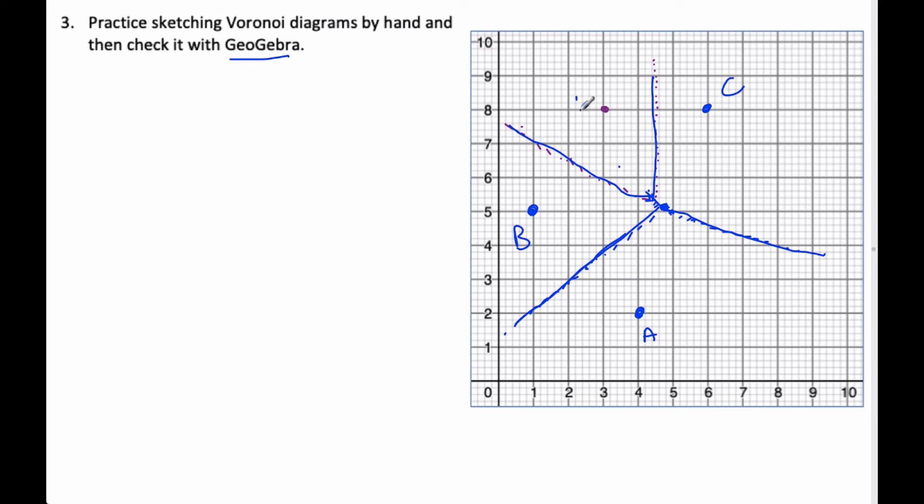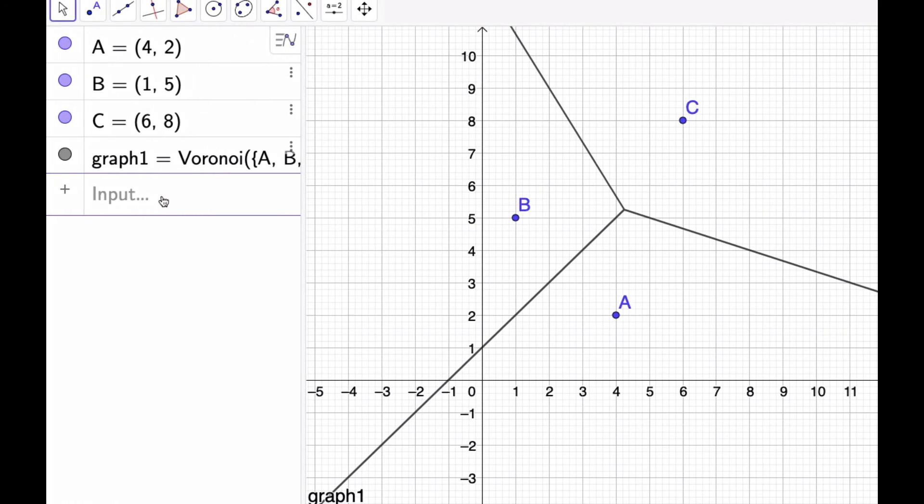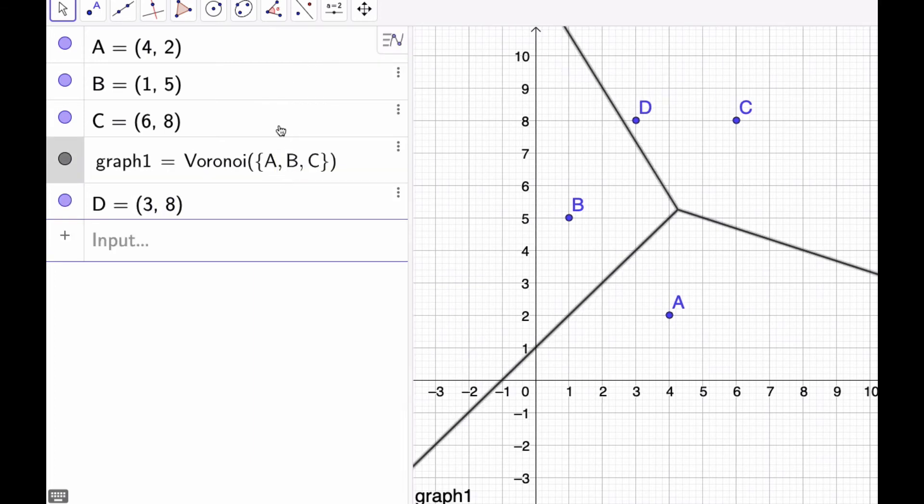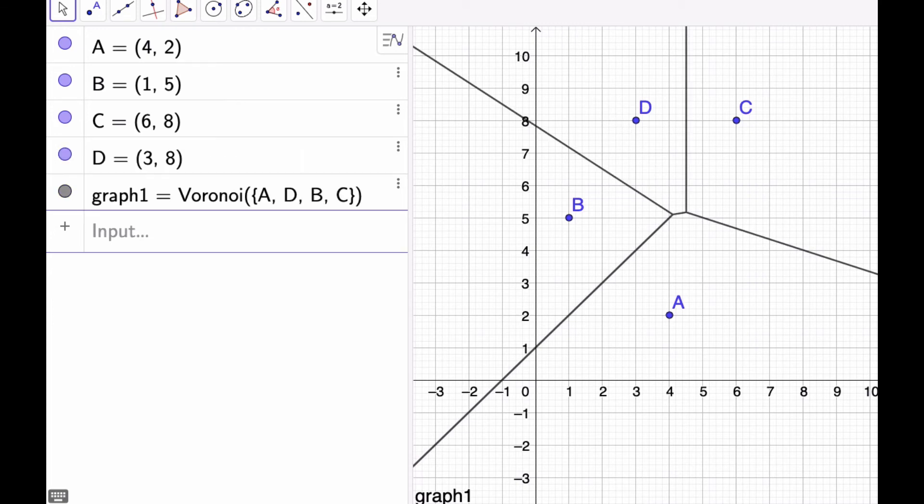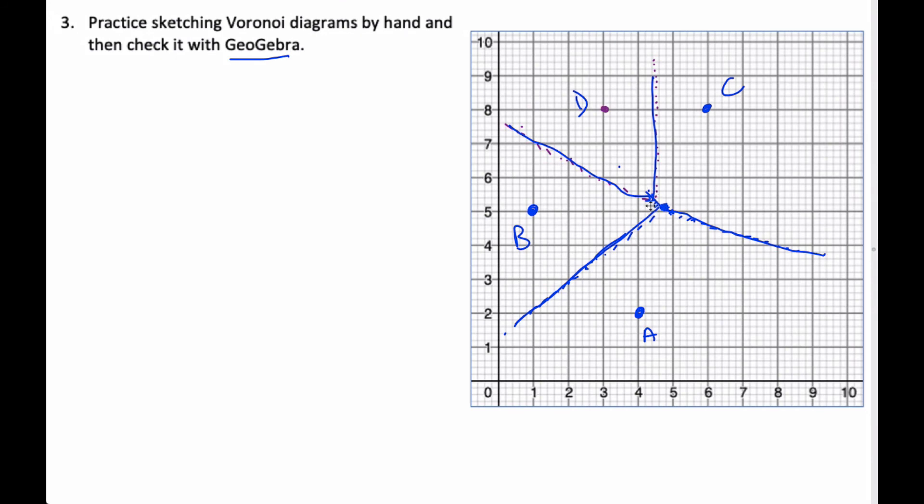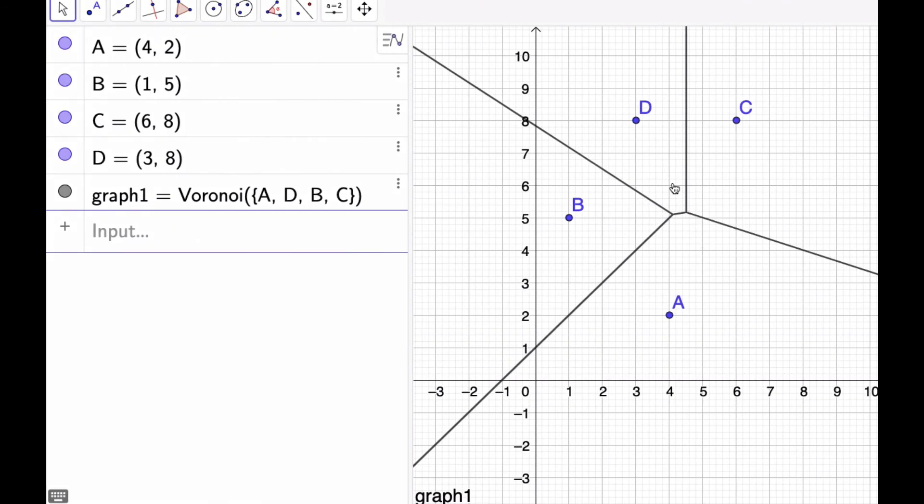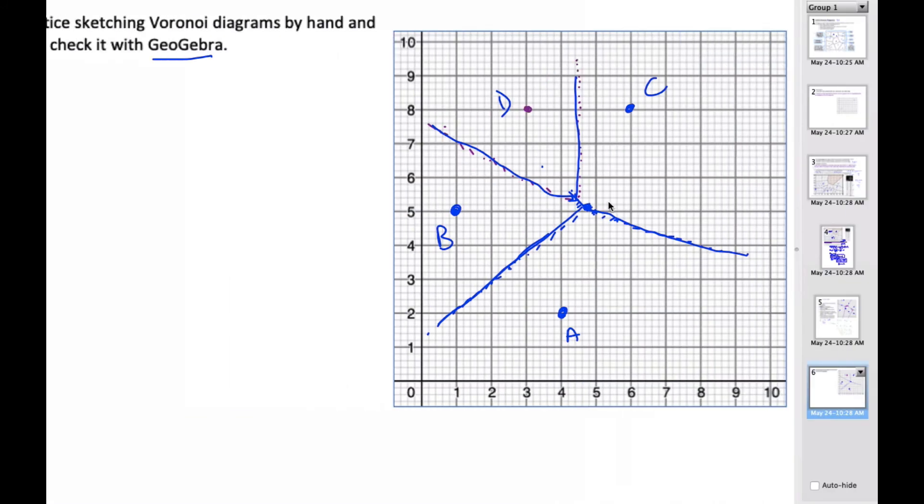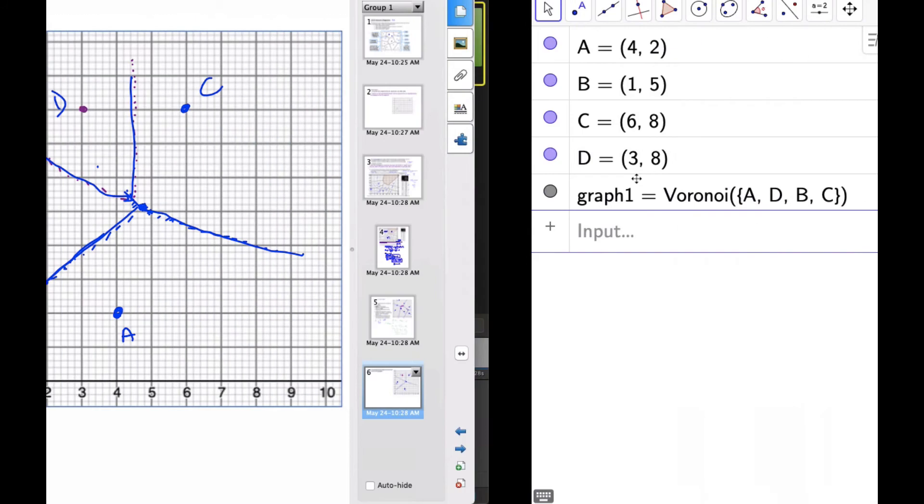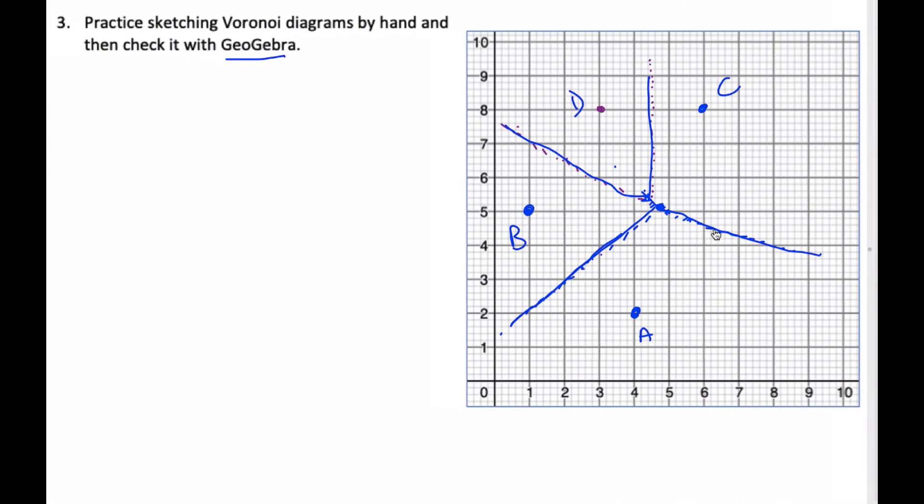And then this is D at 3.8. So if I go over here now, I can type in 3,8. There's my D. And if I go to my Voronoi diagram, I can just add in the point. And so there I can see what my new diagram looks like. And I was a little bit off, but the idea was correct. Just my accuracy is off from where it intersected the vertex.